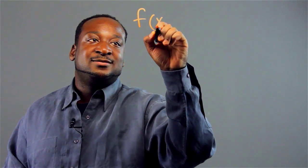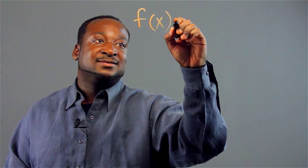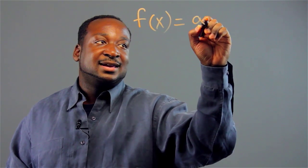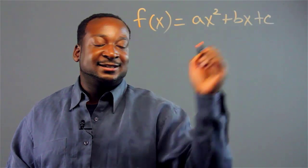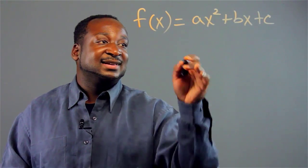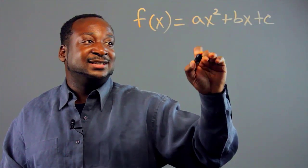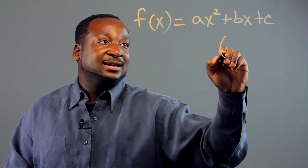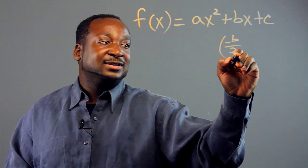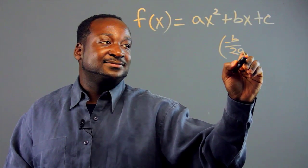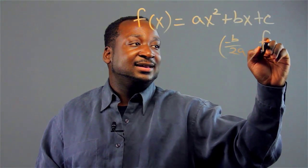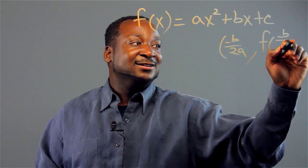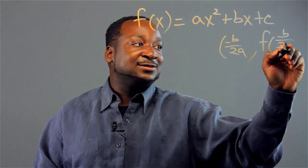Let's say we're given a function. First I'm going to give you the general function ax squared plus bx plus c. Now the vertex of this is negative b over 2a and f of negative b over 2a.